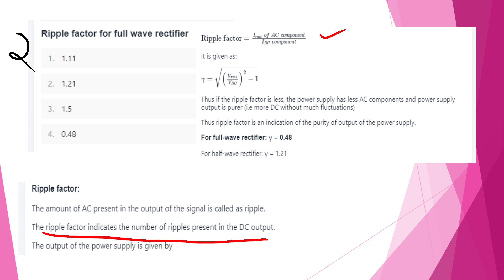We can derive: ripple factor = √[(Vrms/Vdc)² − 1]. This indicates the purity of the output of the power supply — a lower ripple factor means a purer DC output with less AC fluctuation.